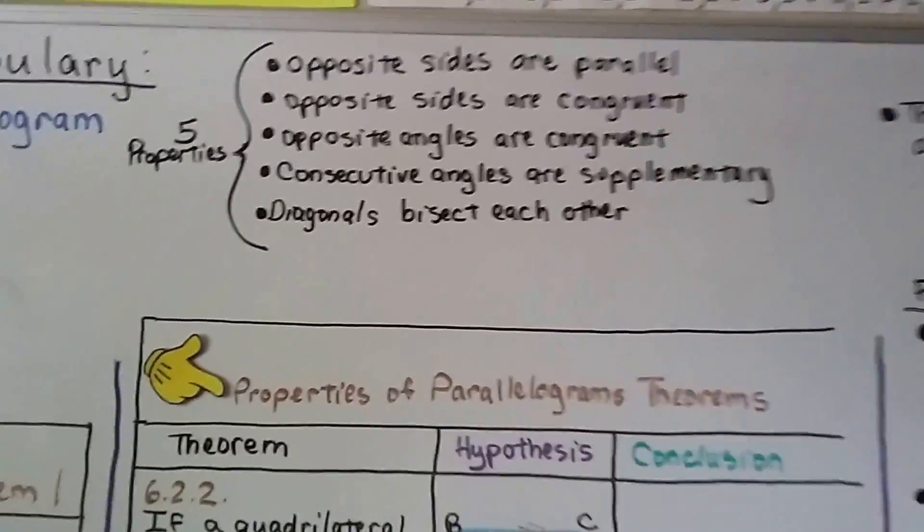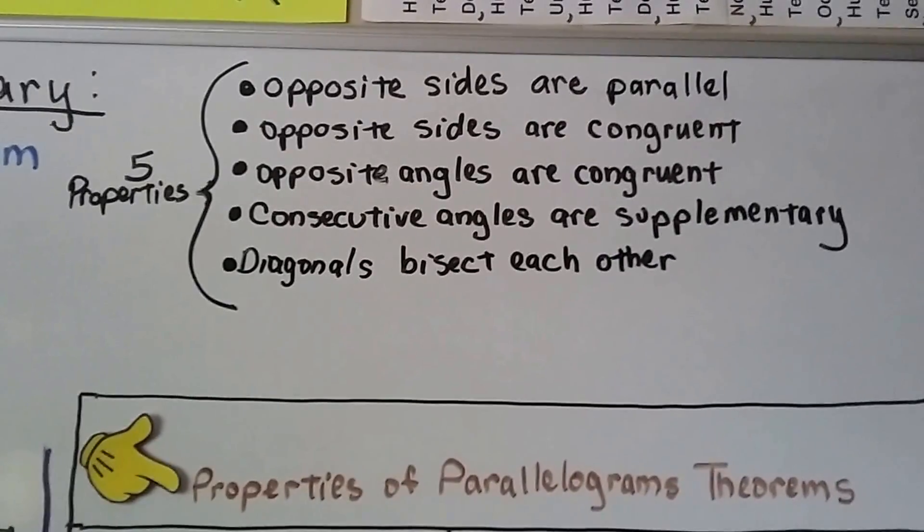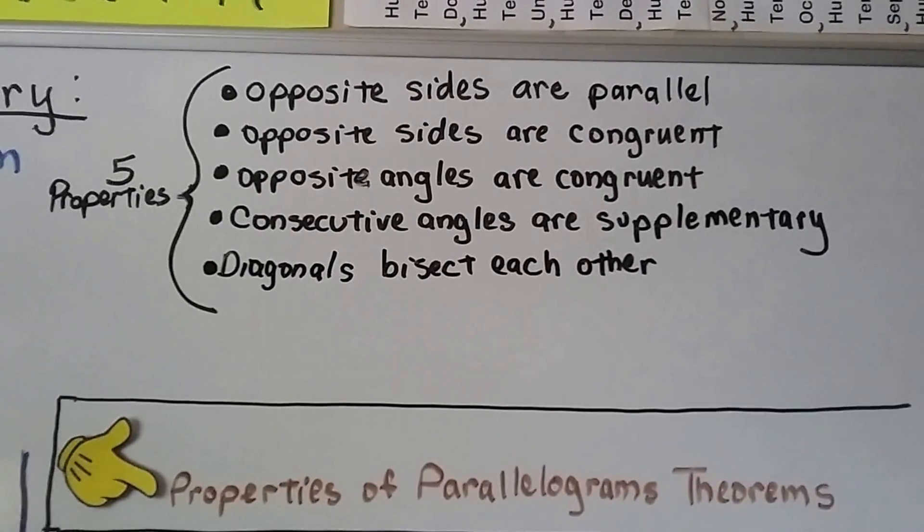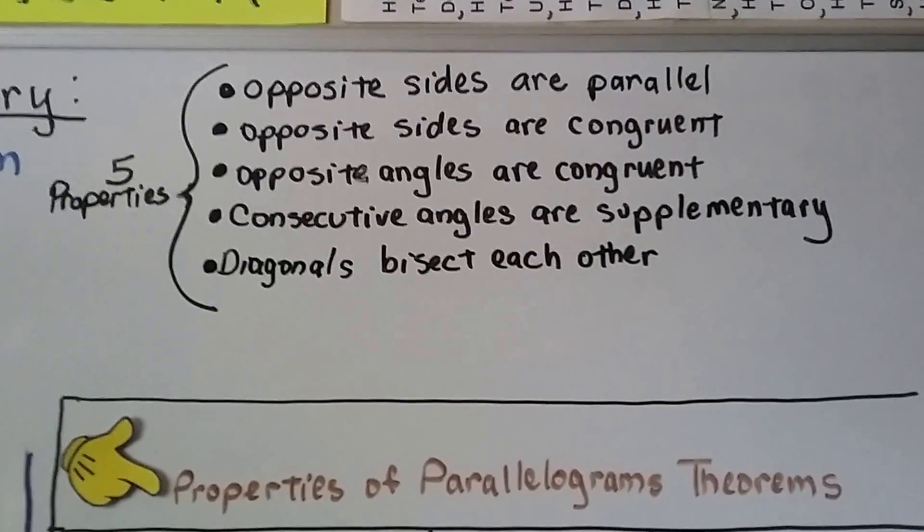So the five properties we end up with are opposite sides are parallel, opposite sides are congruent, opposite angles are congruent, consecutive angles are supplementary, and diagonals bisect each other.